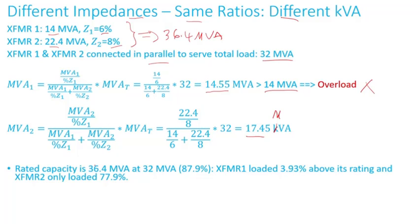The total capability of this substation — transformer one plus transformer two — is 36.4 MVA. The load is only 87.9% of the total capability, yet I'm already overloading transformer one by 3.3% above its rating.